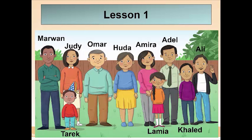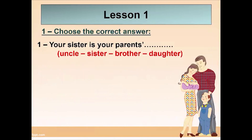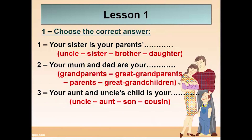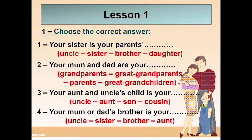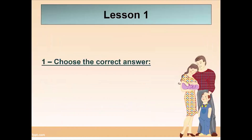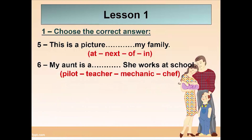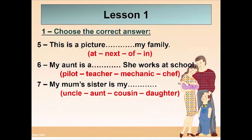Choose the correct answer. Your sister is your parents' daughter. Your mom and dad are your parents. Your aunt and uncle's child is your cousin. Your mom or dad's brother is your uncle. 'This is a picture of my family. My aunt is a... she works at school.' My aunt is a teacher. My mom's sister is my aunt. Lamia and Hany are my cousins.